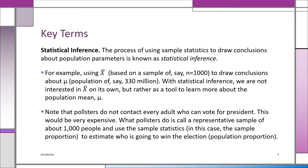Pollsters don't bother contacting everyone — it's too costly. The pollster will take a sample of one or two thousand people to determine who they will vote for for president. Rather than contacting everybody, they take a representative sample of maybe 1,000 people, sometimes more. They get a sample statistic — the sample proportion — and try to estimate who's going to win the election. That's the population proportion. We use the sample proportion as a tool to predict the population proportion, which is really the measure of interest.